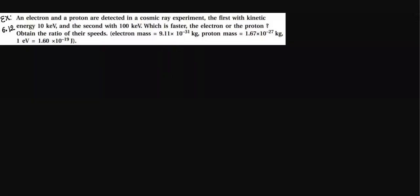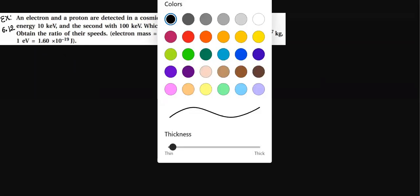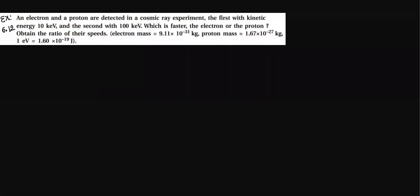Now student, exercise 6.12, standard 11, chapter number 6. An electron and a proton are detected in a cosmic ray experiment.